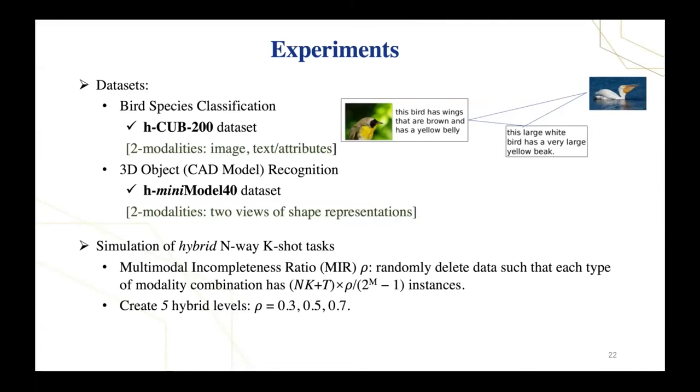In all the experiments, which sample belongs to which feature space was randomly assigned. We use a hyperparameter to control how many samples in a task have missing modalities.